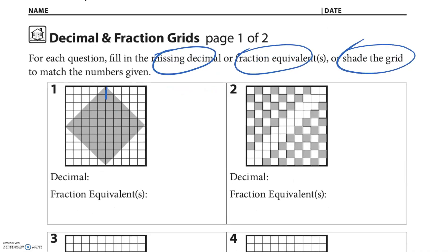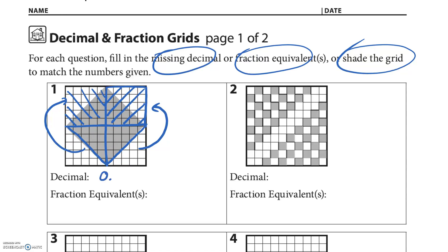For the first one, you need to figure out how many squares are shaded. I can break this into four equal pieces — I can take this triangle and put it up here so that whole triangle is filled in. Then take this one and put it in that blank spot so the whole thing is filled in. So the decimal is 0.5, or five tenths, or 50 hundredths — 50 out of 100 are filled in. The fraction equivalent would be 5 tenths, 50 hundredths, or one half.